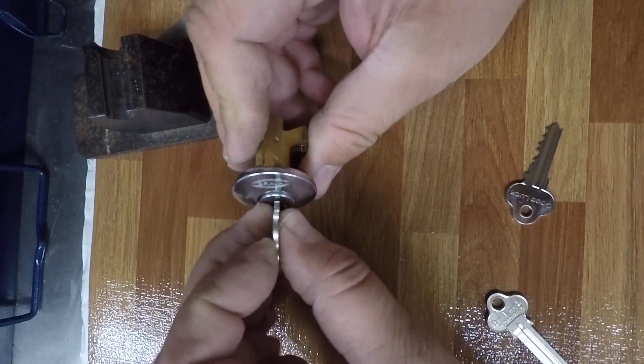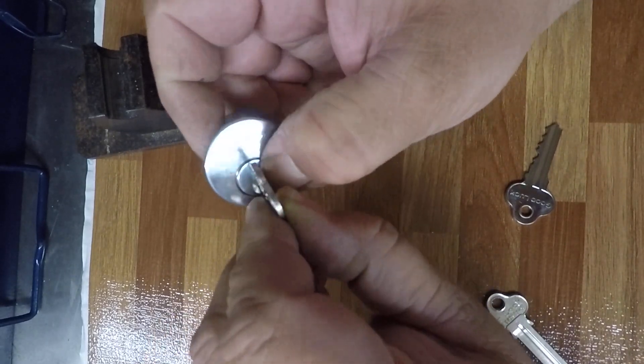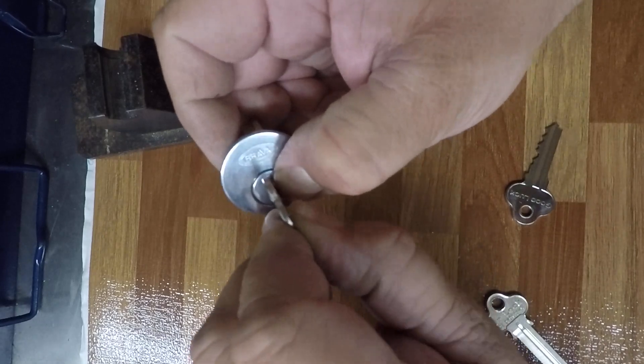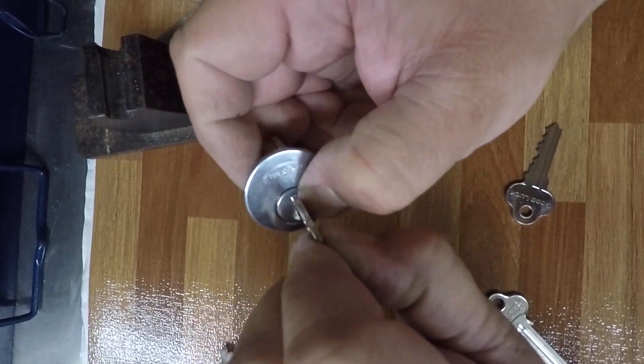Now I go to get my key out. I'm sorry, I should have put the circlip on. I go to get my key out and I'm completely trapped. I cannot get that key out.